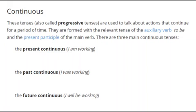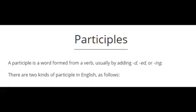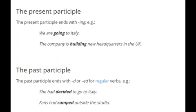A participle is a word form derived from a verb, usually by adding -d, -ed, or -ing. There are two kinds of participles in English: the present participle and the past participle. The present participle ends with -ing. Example: we are going to Italy; the company is building new headquarters in the UK. The past participle ends with -d or -ed for regular verbs. Example: she had decided to go to Italy; fans had camped outside the studio.